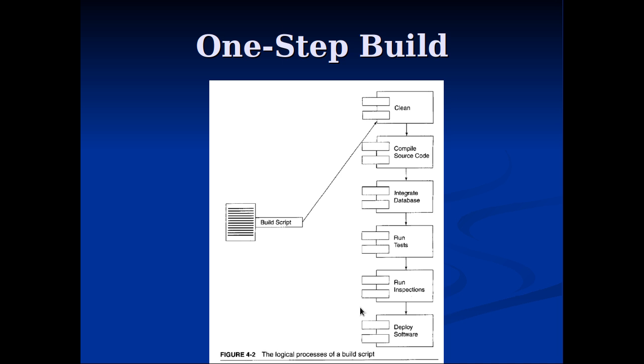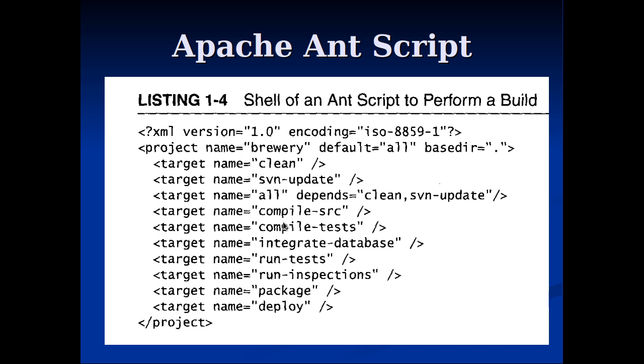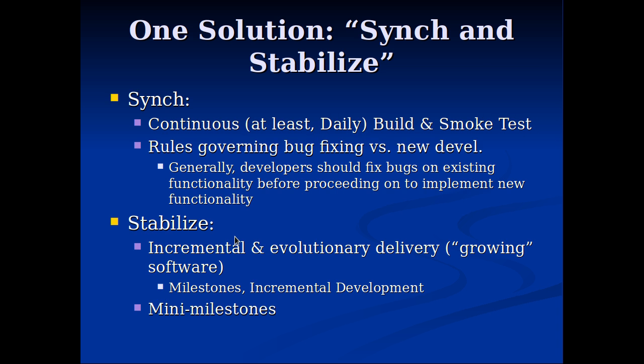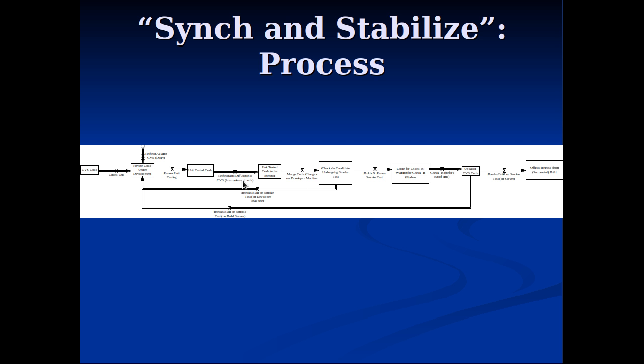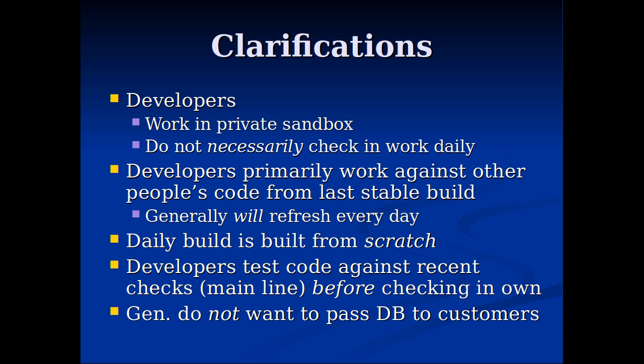A lot of advantages here in avoiding the 'big bang' that used to afflict a lot of projects. Here's an Ant script that might characterize different steps: checked-in coded development, code that's unit tested, code to be merged into the repository, code undergoing smoke tests, and then later code that might need further modifications due to bugs found. The goal is to build this daily build from scratch every time. Developers work in their private sandbox, but before they push, they should be compiling on their own local machine and pulling other people's latest code.